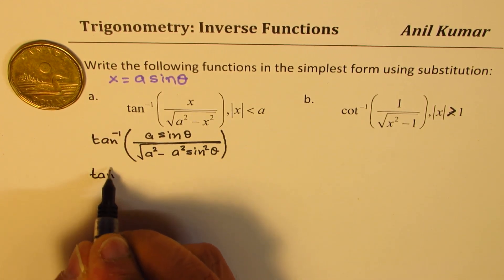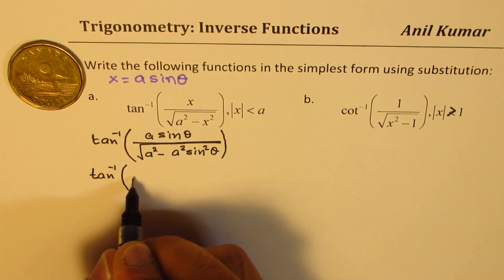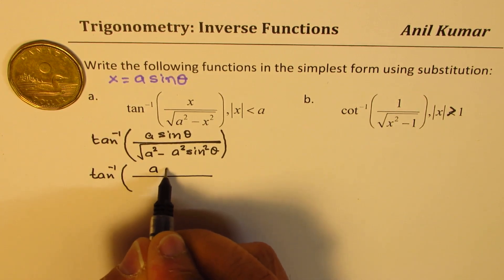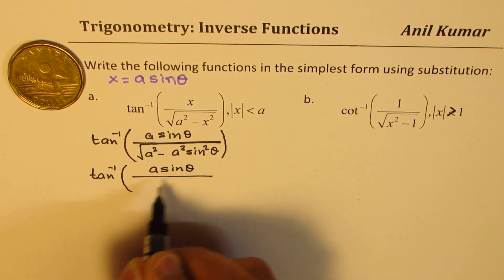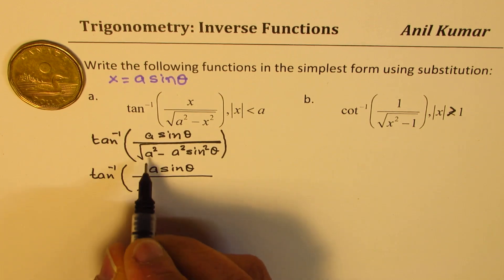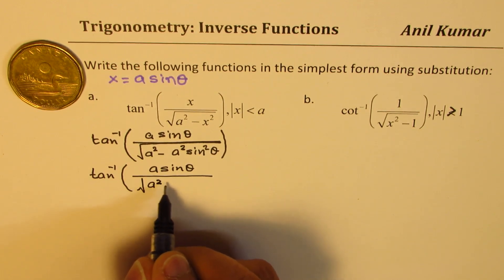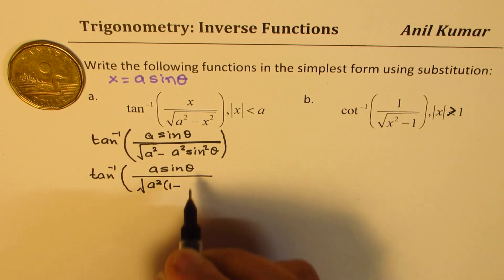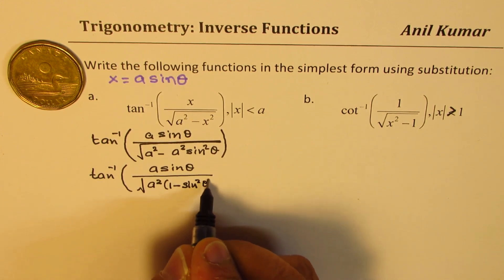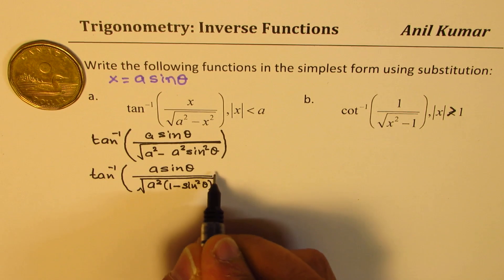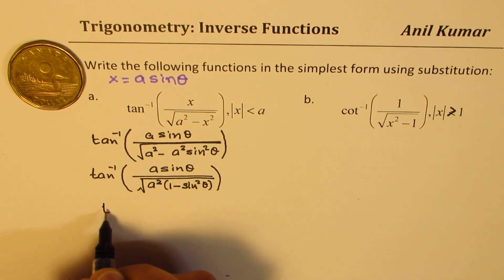Within the square root. Now I could write this as tan inverse of, numerator remains as a sin theta, however, the denominator, we can take a square common, we get 1 minus sin square theta.